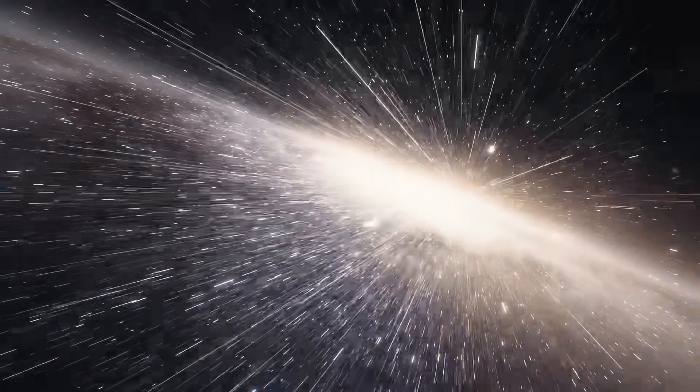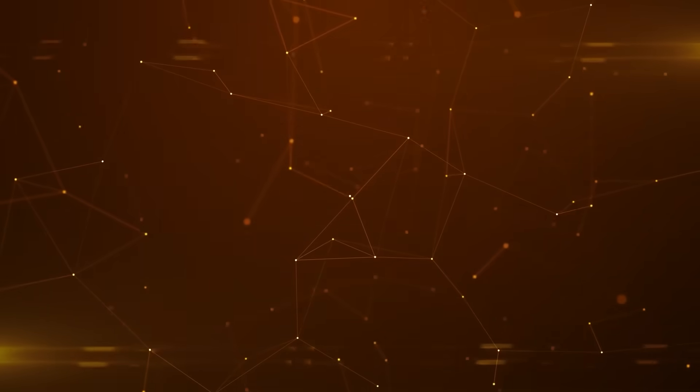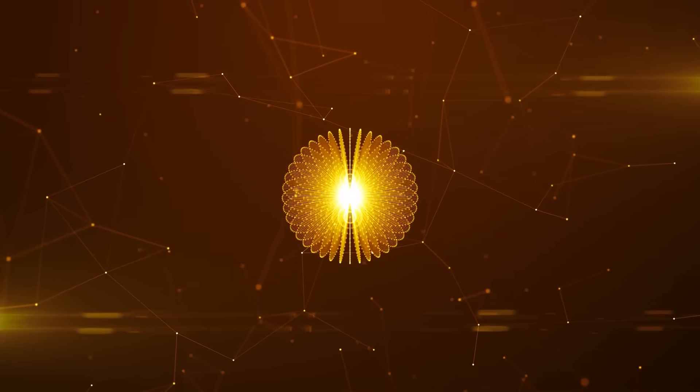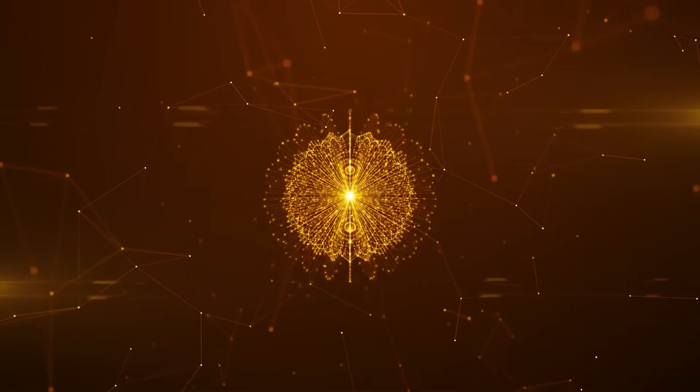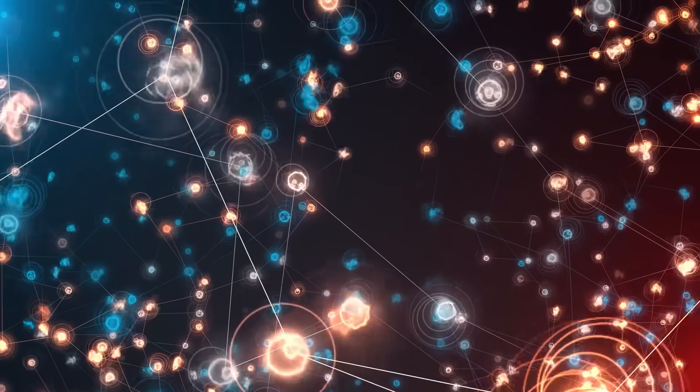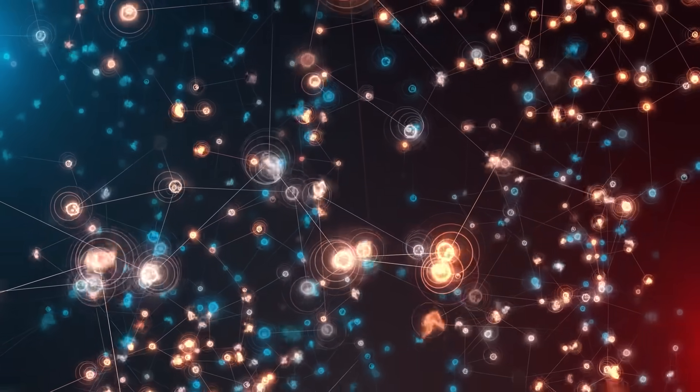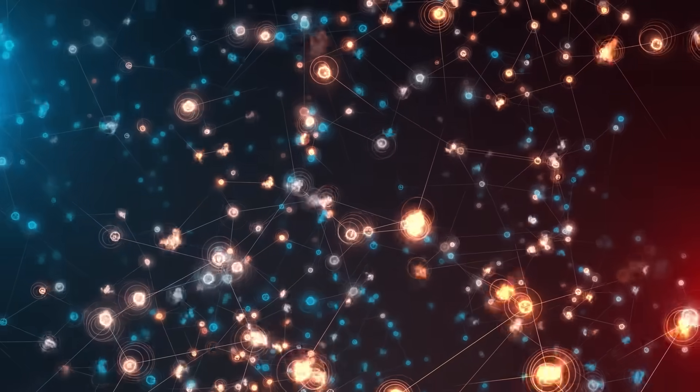So when you measure one particle, it becomes spin up. In our reality, another version of you in another universe measures the same particle and it becomes spin down. Entanglement, then, isn't just about two particles sending faster than light messages. It's a single event, the measurement, causing the universe itself to split into different branches, each containing a different outcome.